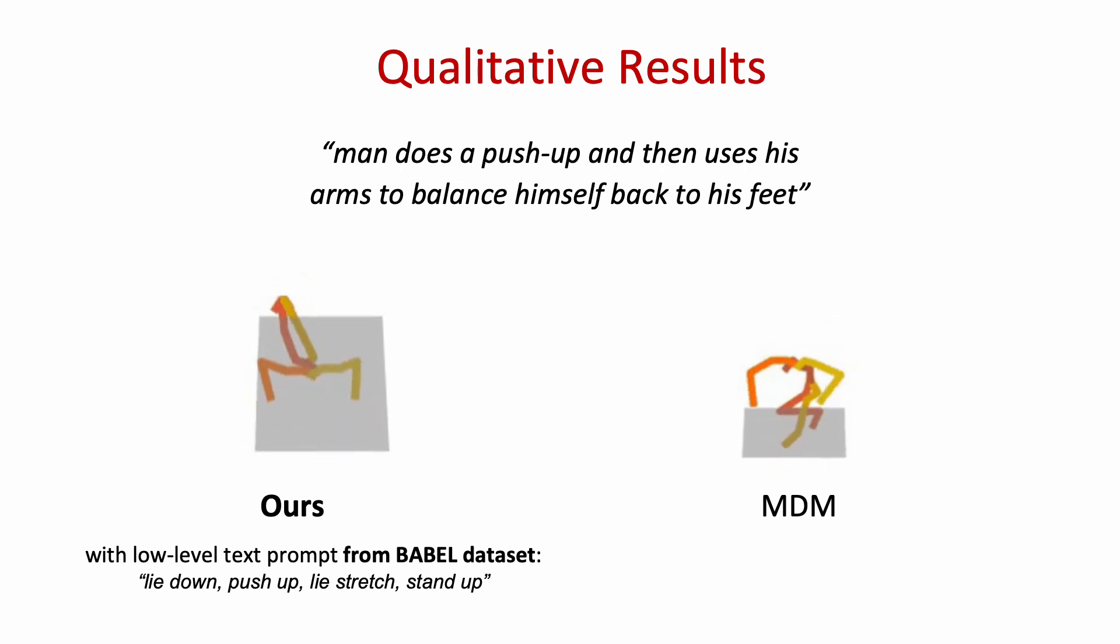In the following three slides, we show some more qualitative results with different types of low-level text prompts. In this example, a man does a push-up and then uses his arms to balance himself back to his feet. We use low-level text prompt from BABEL dataset. The generated motion of Motion GPT is complete and more natural.